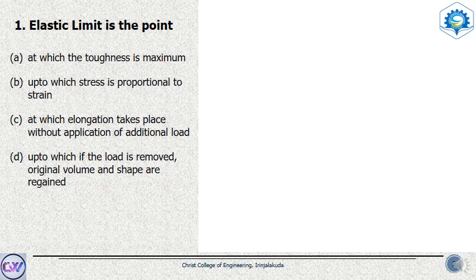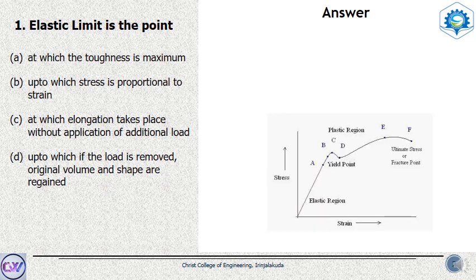Sometimes you may get confused with option B — that is, up to which stress is proportional to strain. But remember that the point up to which the stress is proportional to strain is called the proportional limit. Here is the stress-strain diagram that I discussed.